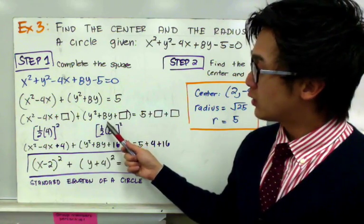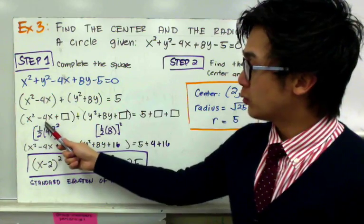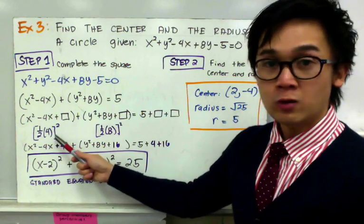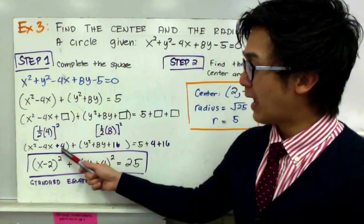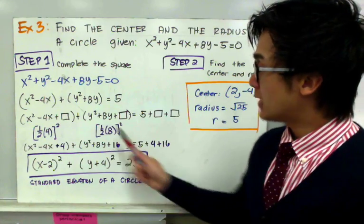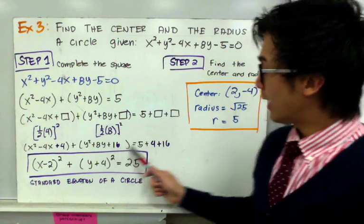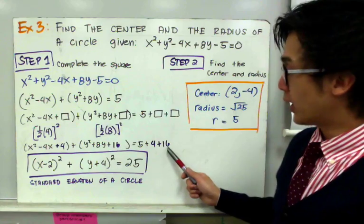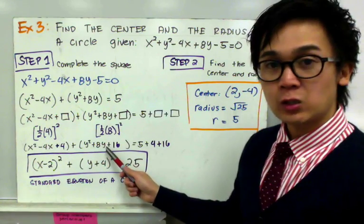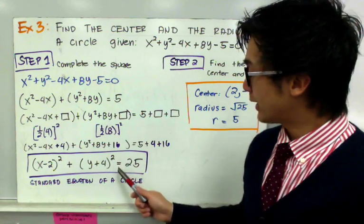To complete the square, take half of the middle term and square it. For x: half of −4 is −2, and (−2)² = 4. For y: half of 8 is 4, and 4² = 16. Add 4 and 16 to both sides. Factoring gives the standard equation: (x − 2)² + (y + 4)² = 25.